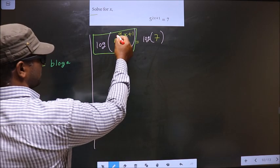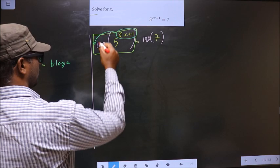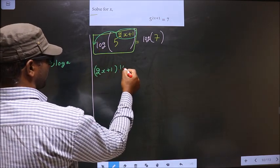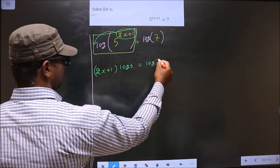So here the power is 2x+1. It will come before the log making it (2x+1)log 5 = log 7.